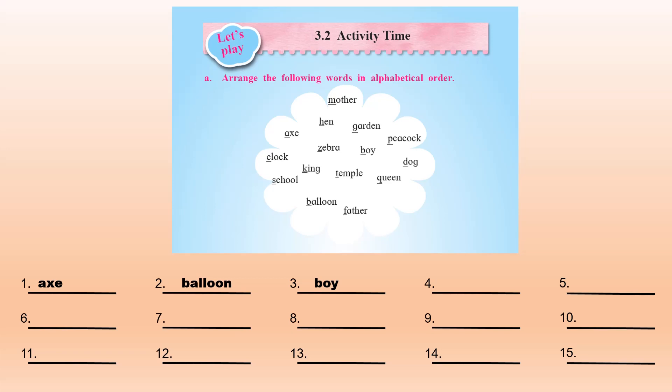Let's quickly complete this activity. The first word is already written for us — it's axe. The next word as discussed is balloon. Our third word is boy. The fourth word is clock because it begins with C — A, B, C.